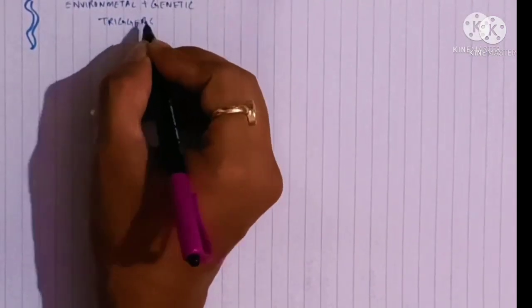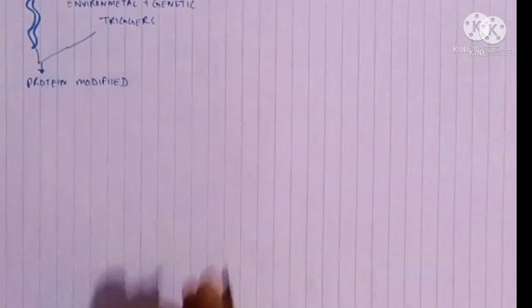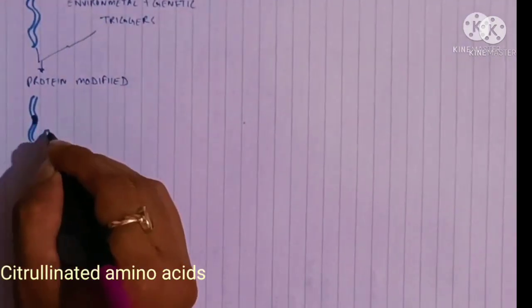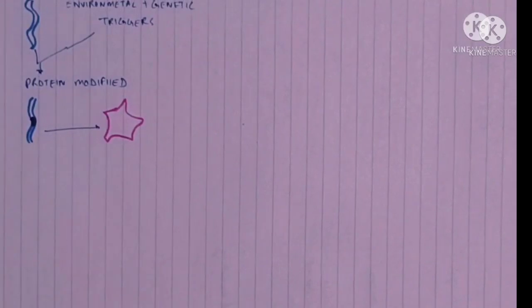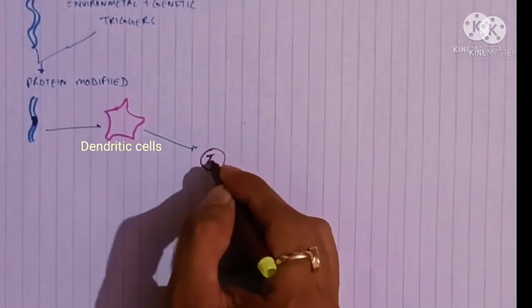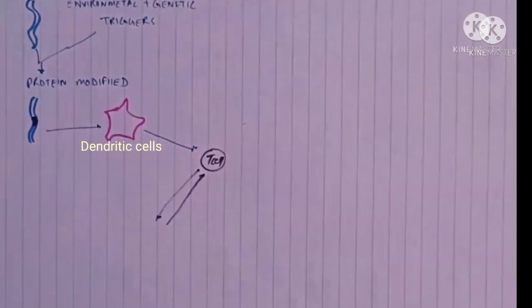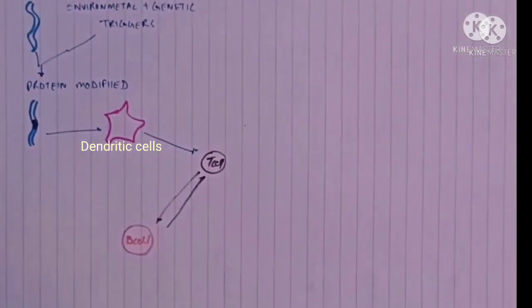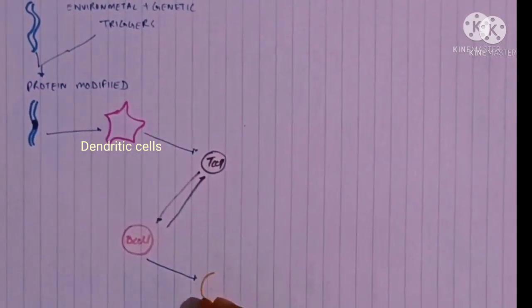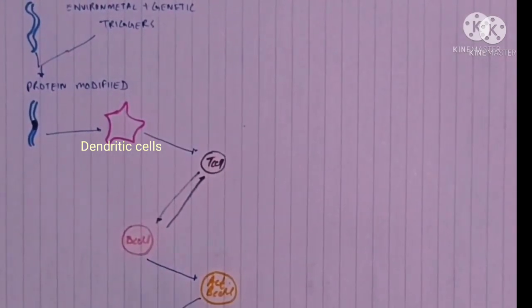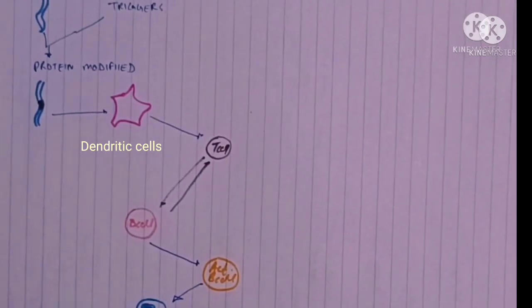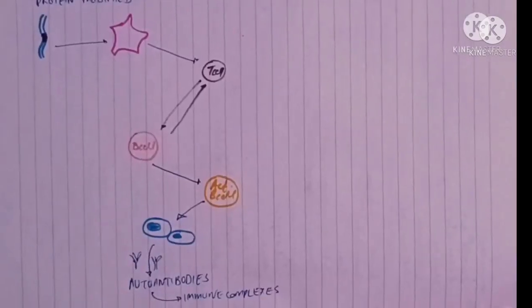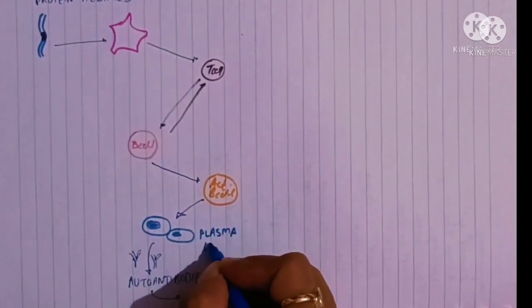A host protein, due to environmental and genetic triggers, becomes modified — specifically, amino acids are replaced by citrulline, which we call citrullination. These modified proteins are presented by dendritic cells to T cells, which then stimulate B cells. The activated B cells lead to the formation of plasma cells, which produce autoantibodies.